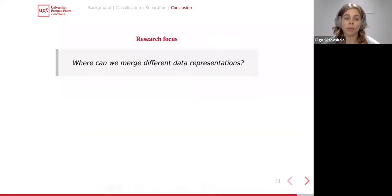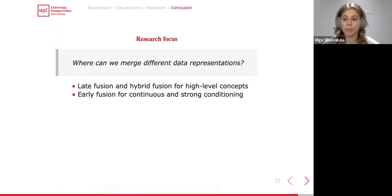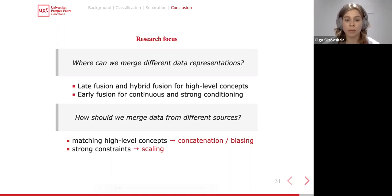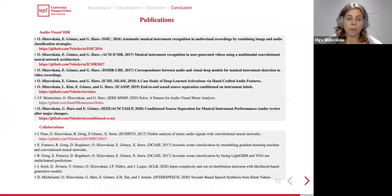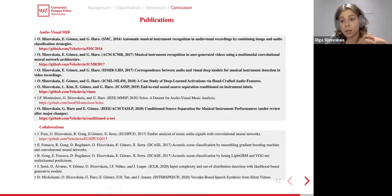With respect to our research focus: it seems that late fusion and hybrid fusion are more suitable for high-level concepts, while early fusion may be more suitable for strong, continuous conditioning at each layer. For matching high-level concepts, concatenation and biasing can be better, while for strong constraints, scaling can be used. The results of this work were published in a number of peer-reviewed conferences and we have one journal publication under revision. In every contribution, we prioritized reproducibility — nearly all results can be reproduced and both code and datasets are publicly available.